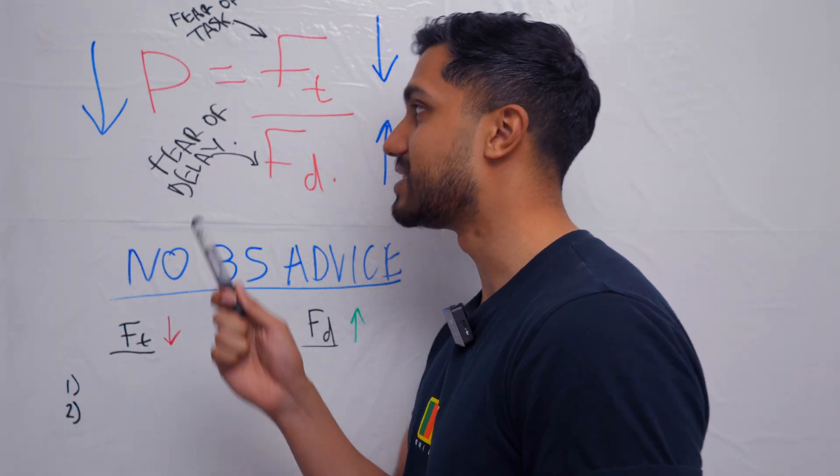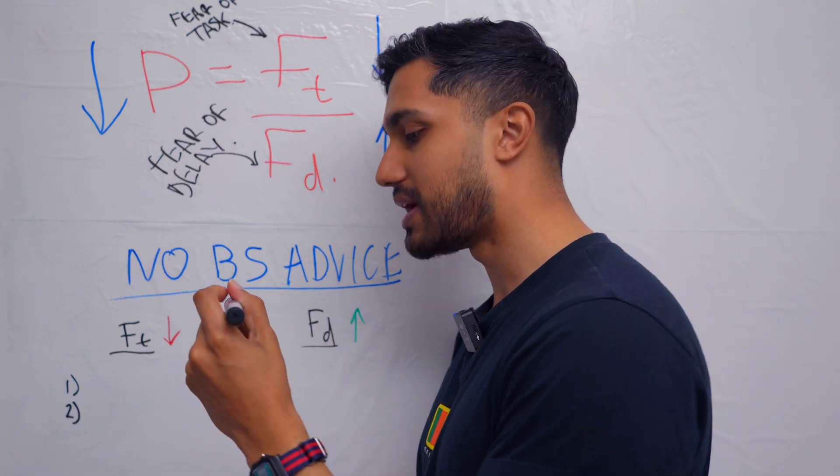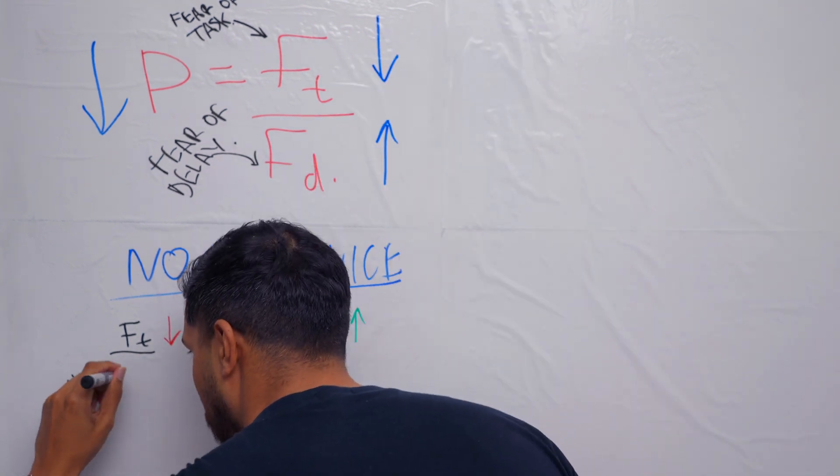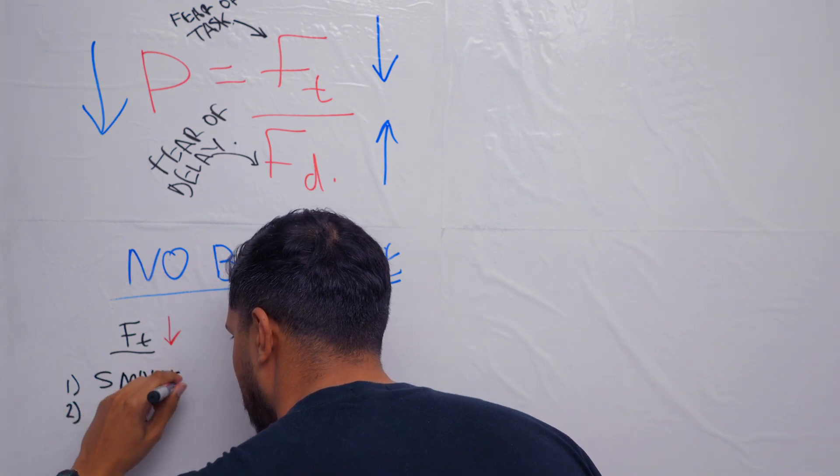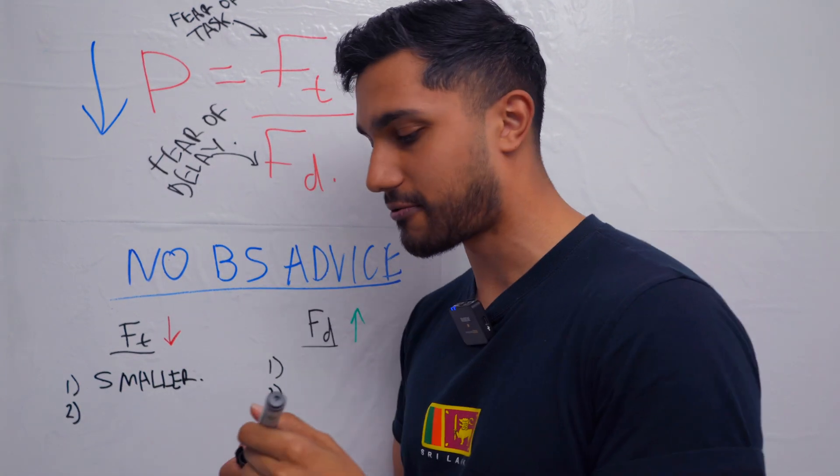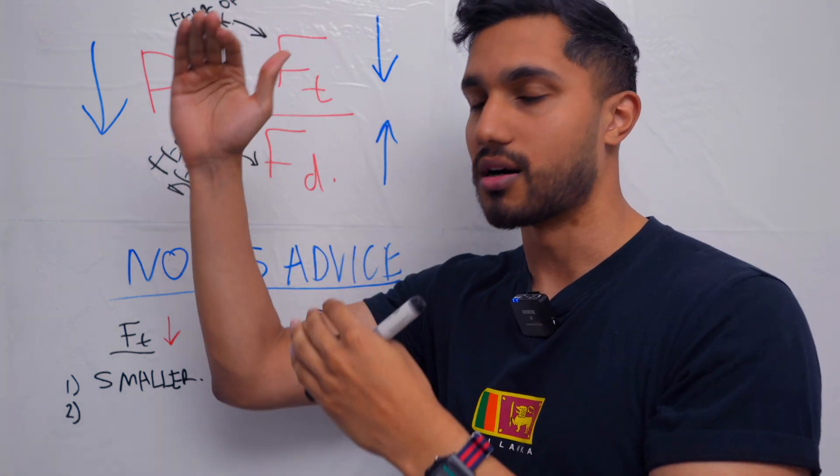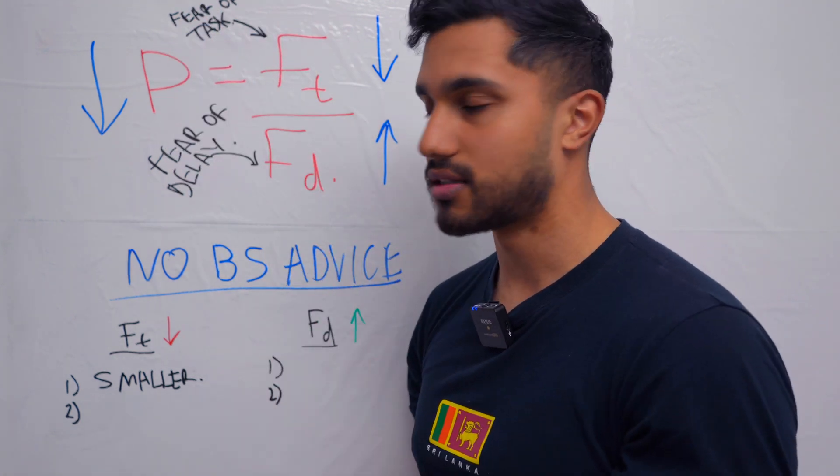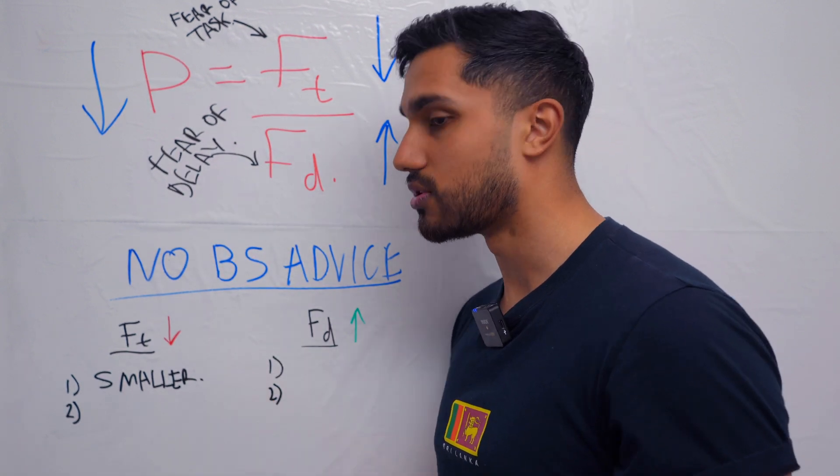So first things first, you need to decrease the fear of the task. The way that you do that is to make the task smaller. If you make the task smaller, it is less scary. It's like fighting one soldier instead of fighting a whole army. If something is too large, you are too scared to do it, and so you procrastinate.